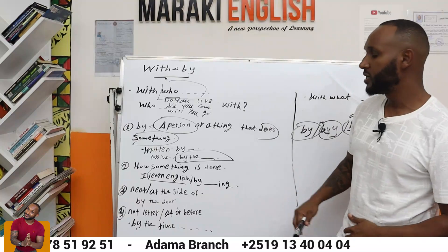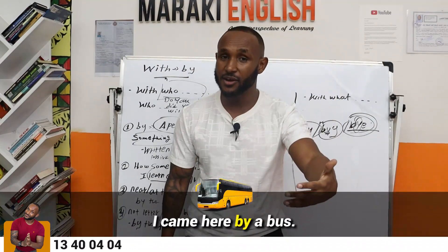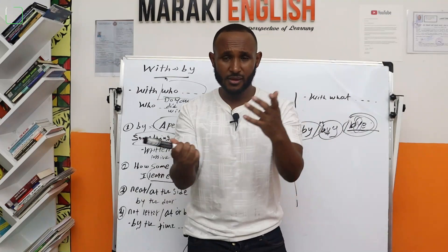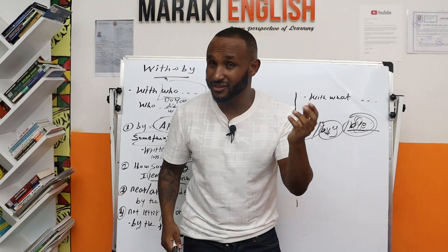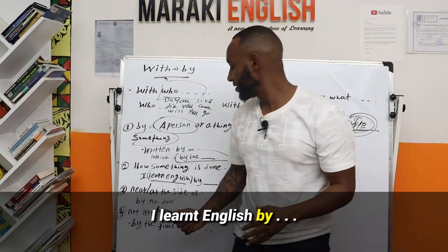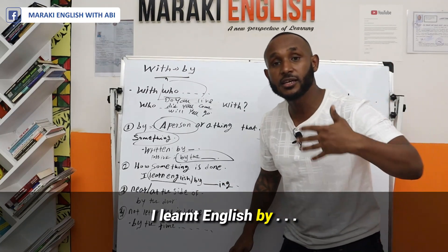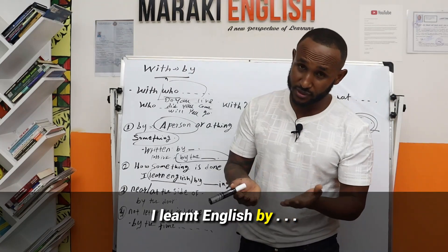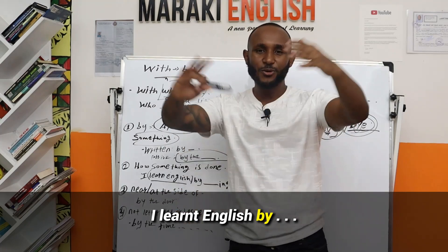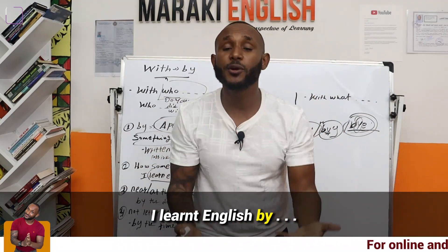The second meaning of 'by' is how something is done. Let's say you came here — I want to ask how you came here. 'I came here by bus' — meaning that's what brought you here. And if you listen to me this far, your English is good. So how did you learn English? I learned English by doing what? If you have 'by,' you always follow it with the -ing form. 'I learned English by watching movies, by reading books, by practicing with my friends.'